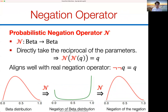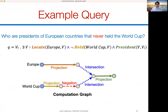Another nice property of this approach is that a negation of a negation gives the same distribution back — if you take a beta distribution, invert the parameters, then invert again, you return to the original beta distribution. Now let me give an example of how this works and how we execute a query.